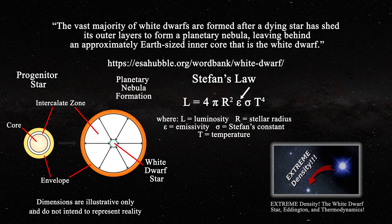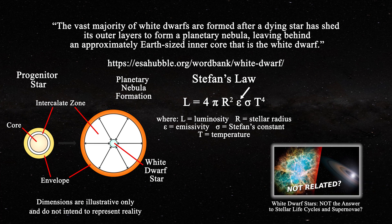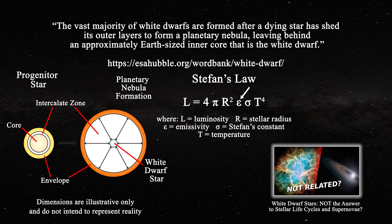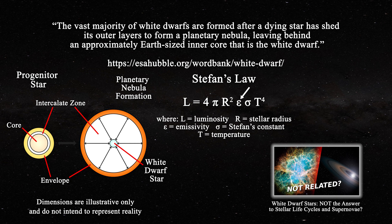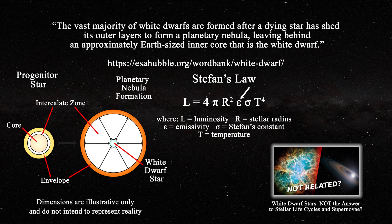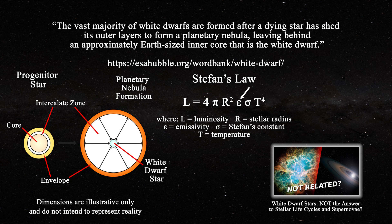Furthermore, white dwarf stars are the product of explosions, not their precursors. The fact that white dwarfs are present at the center of nebulae directly refutes the idea that supernovae are produced when a white dwarf star accretes mass from an adjacent star, moves above the Chandrasekhar limit, becomes unstable and explodes. This hypothesis is completely disproved by the presence of white dwarfs at the center of planetary nebulae.